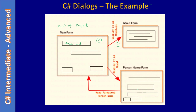In the person name form, we will fill some details and once you click OK we will get a formatted result populated in the main form. That means we will set the name field as a read-only field, you type content in the dialog, and you will see that content appearing in the main form as formatted content.